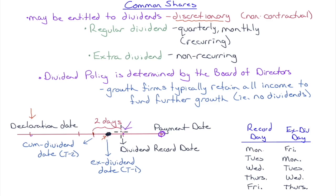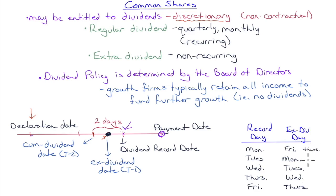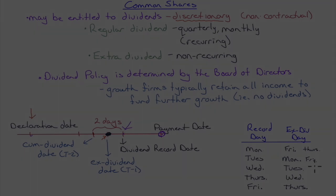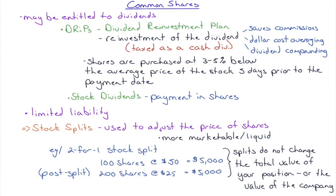To illustrate: if the dividend record date is a Monday, the ex-dividend date is the Friday before (assuming no holidays). If the record date is Tuesday, you back up to Monday. So to get the dividend on a Monday record date, you must buy on the Thursday before. If the record date is Tuesday, you must buy by the Friday before — and if that's a holiday, back up one more trading day.